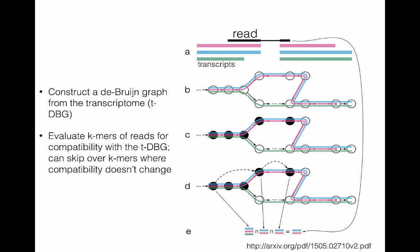In part C, you can see that the read has been turned into its constitutive k-mers, and those k-mers have been mapped to the De Bruijn graph. You can see that the first three k-mers match across pink, blue, and green transcripts, but the fourth k-mer only matches to pink and blue, and not to green, so it takes the upper path along the De Bruijn graph. Additionally, you can speed up this process by skipping k-mers where the compatibility with the De Bruijn graph does not change. With the dashed arrows, you can skip from the first k-mer to the fourth k-mer to the fifth k-mer, and then take the intersection of those compatibilities to understand which transcripts the read belongs to.